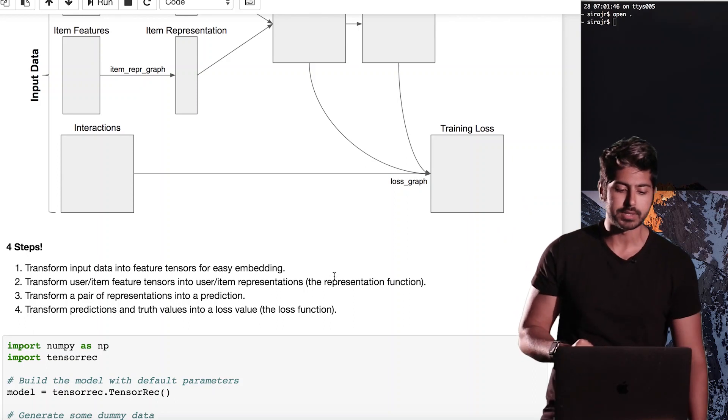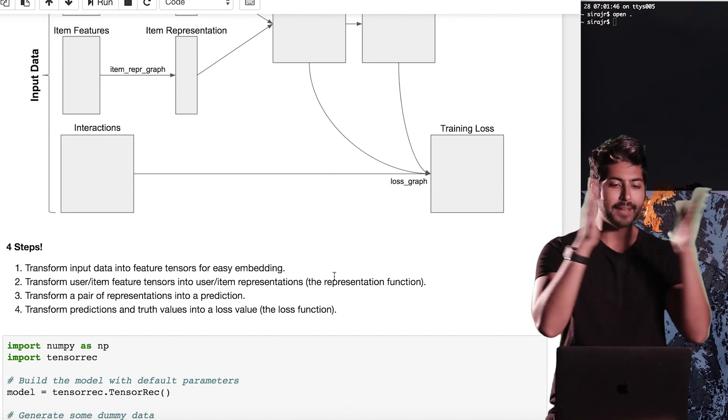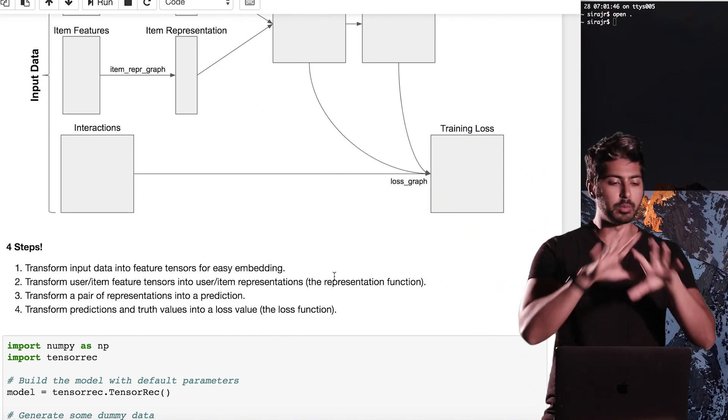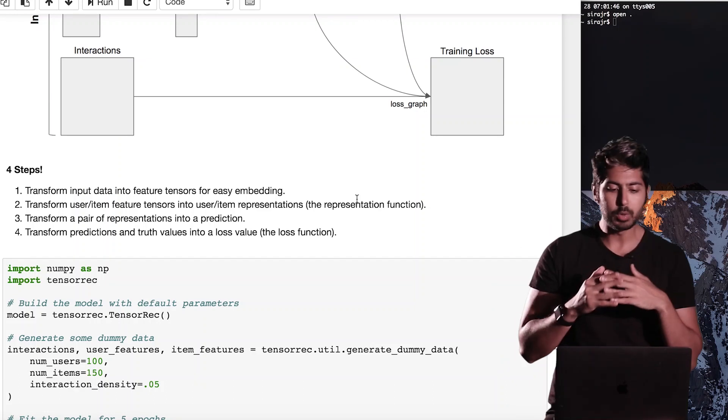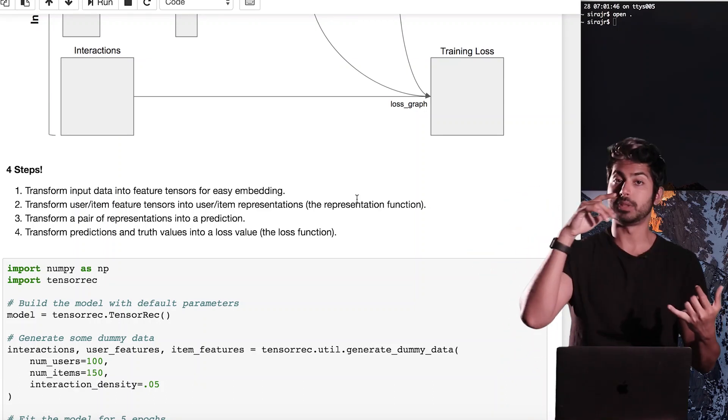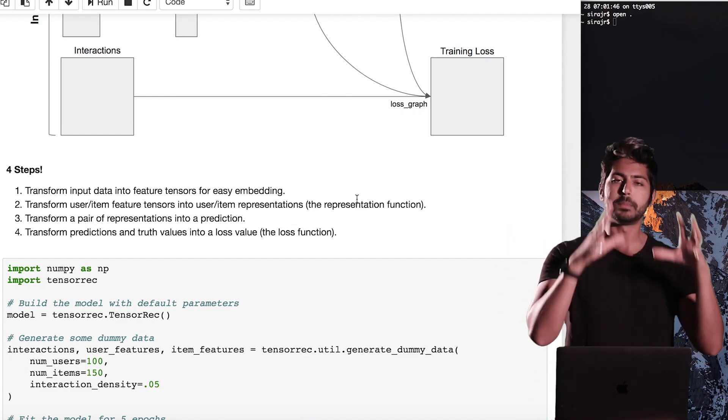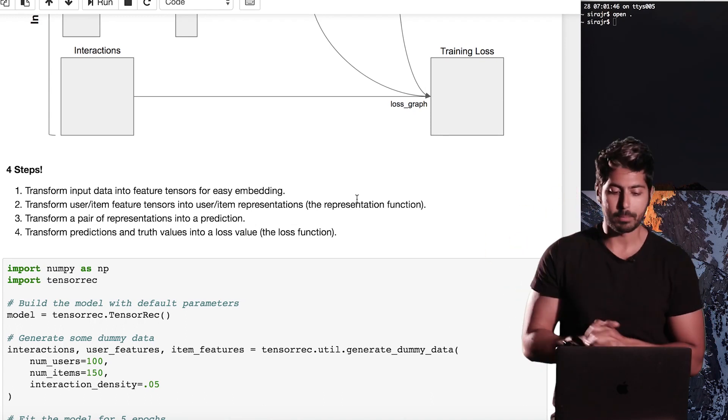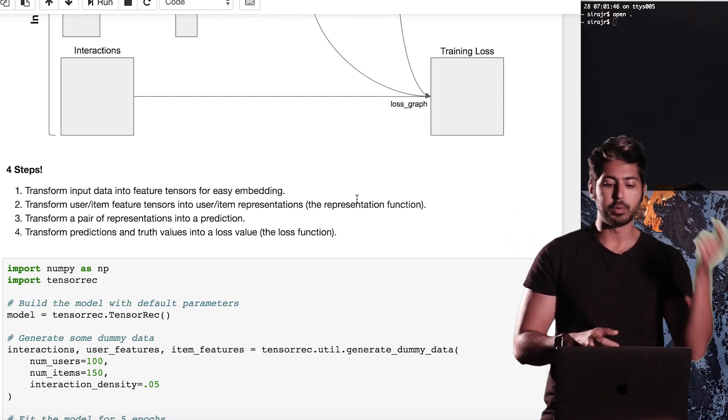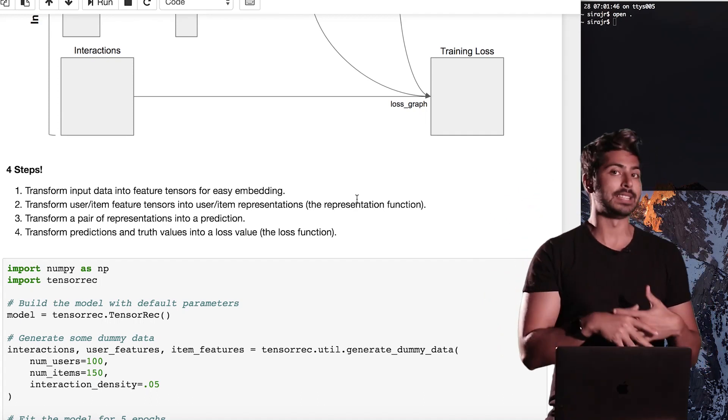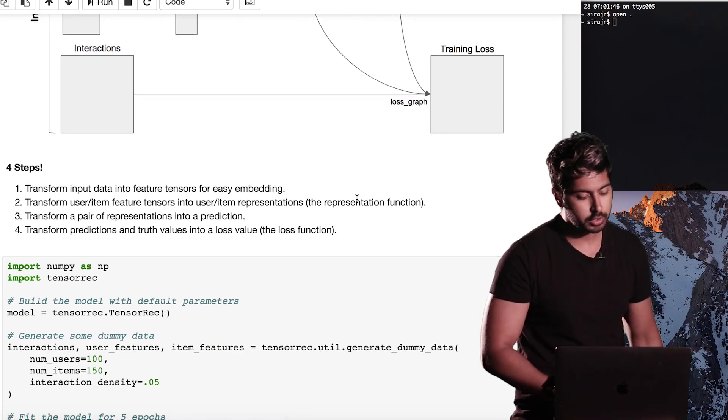So there are four steps in this process. The first one is to transform our input data into feature tensors for easy embedding. We have some input data, that's a giant matrix. And then we use pandas to convert that into a data frame object. And once we do that, we convert them to feature tensors using an algorithm like word2vec. And then once we have that, we transform the user-item feature tensors into user-item representations. We transform that pair into a prediction and then transform that prediction and truth value into a loss value for a loss function. Minimize that using gradient descent until we have reached a minimal loss function value.